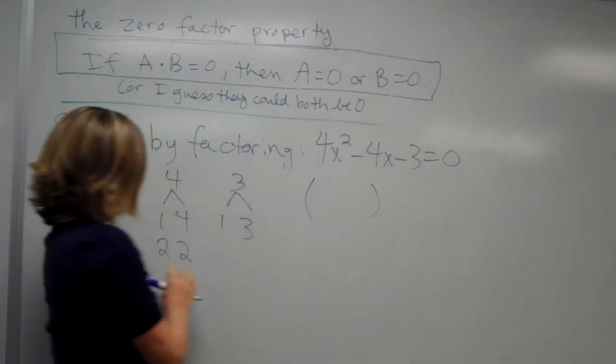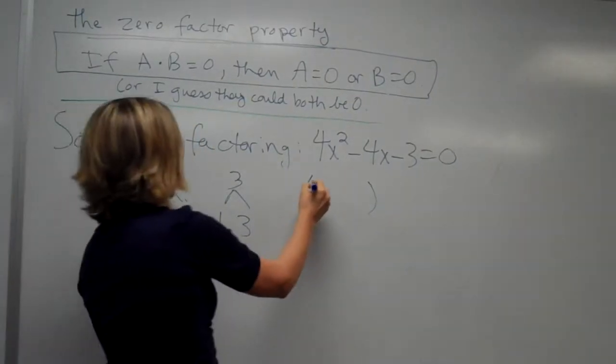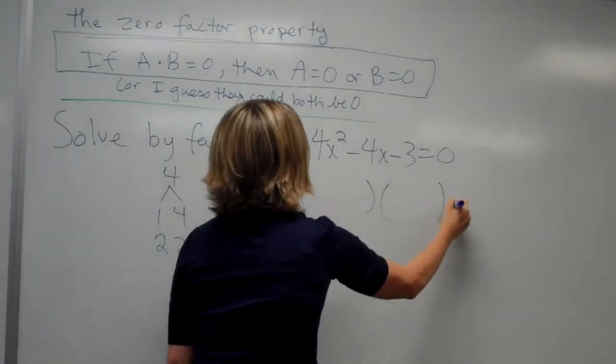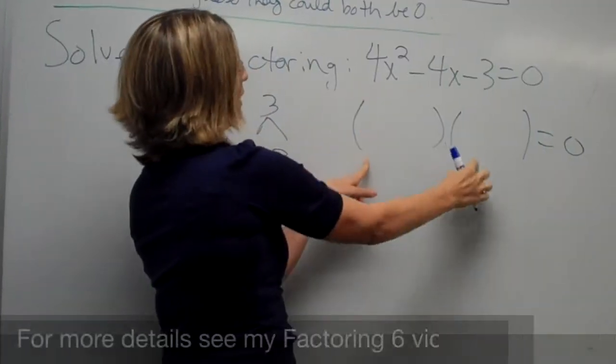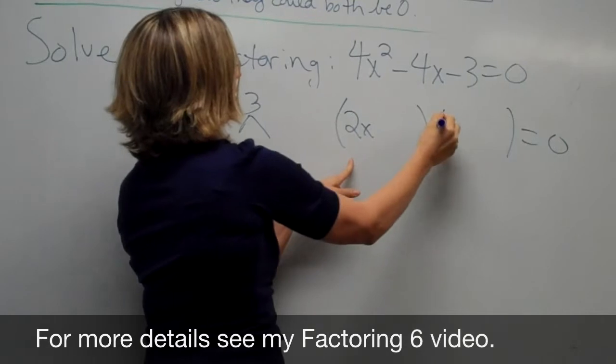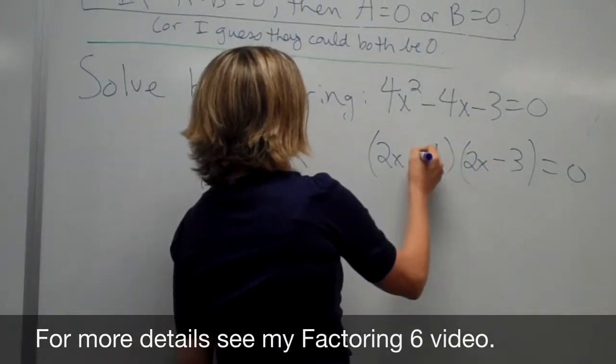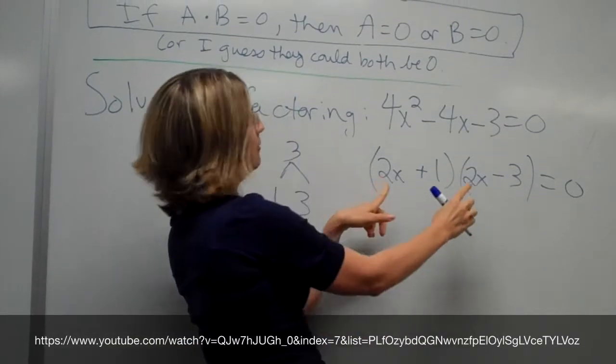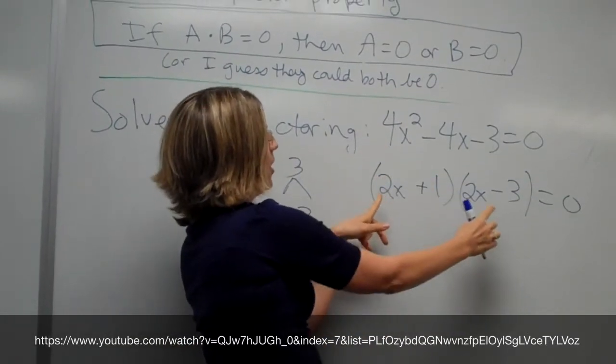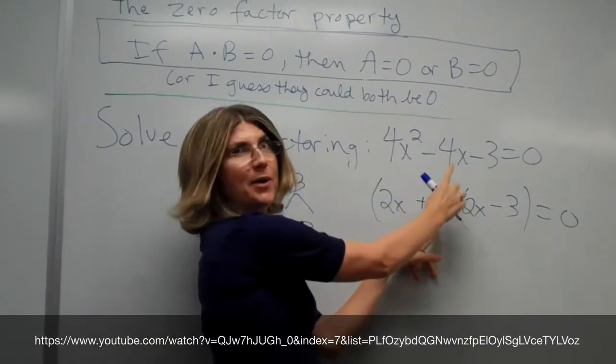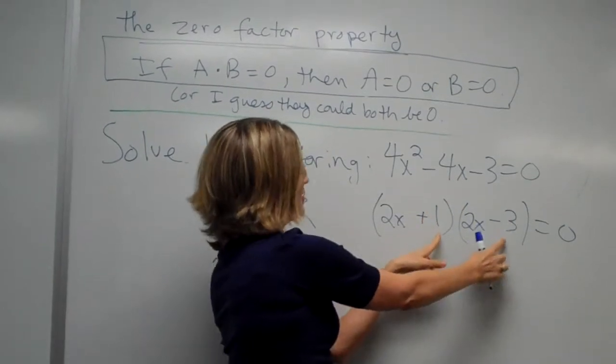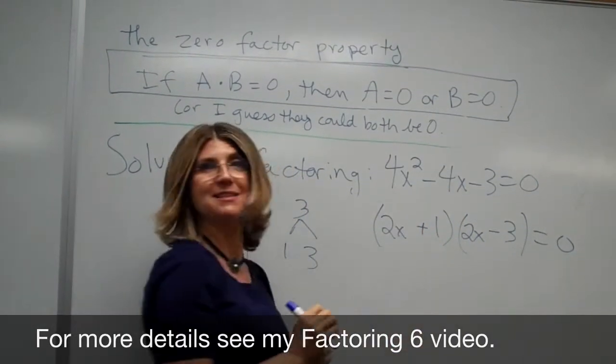So I will start with the smaller factors first and hope that those will work. So 4x squared could split into 2x and 2x, I'm guessing. So if we do a minus here and a plus here, then we get 4x squared minus 6x plus 2x is minus 4x, minus 3. So it looks like this is good.